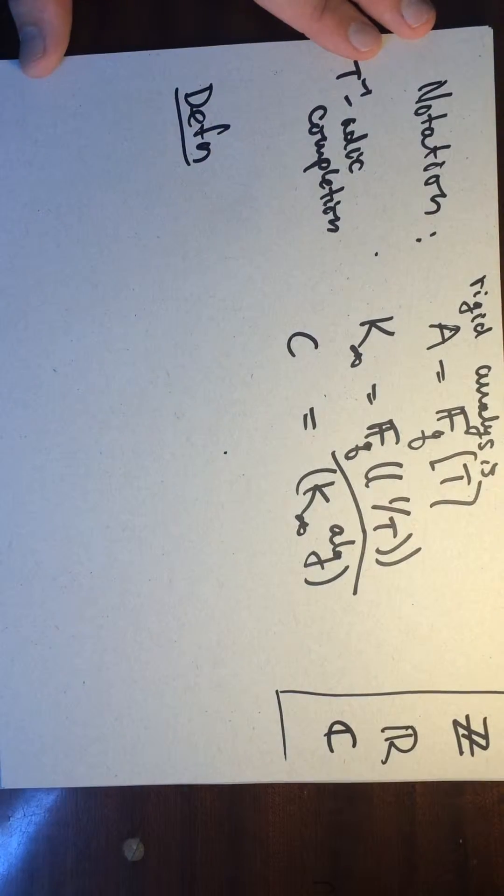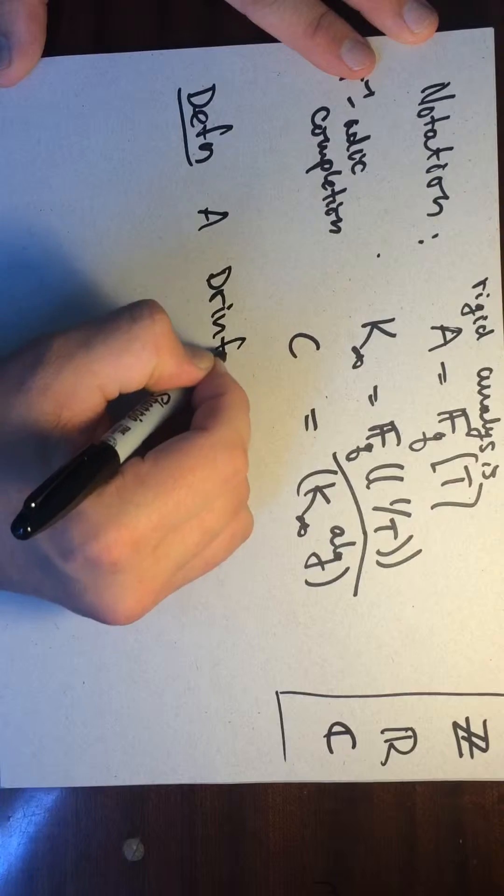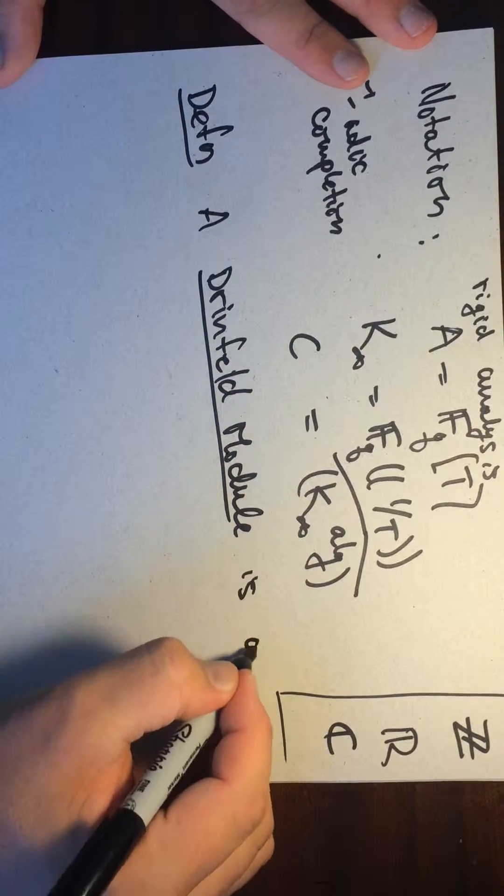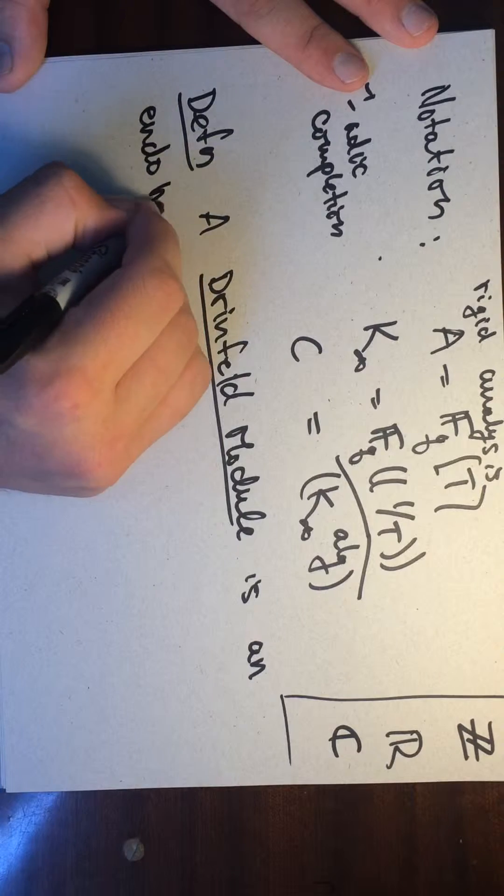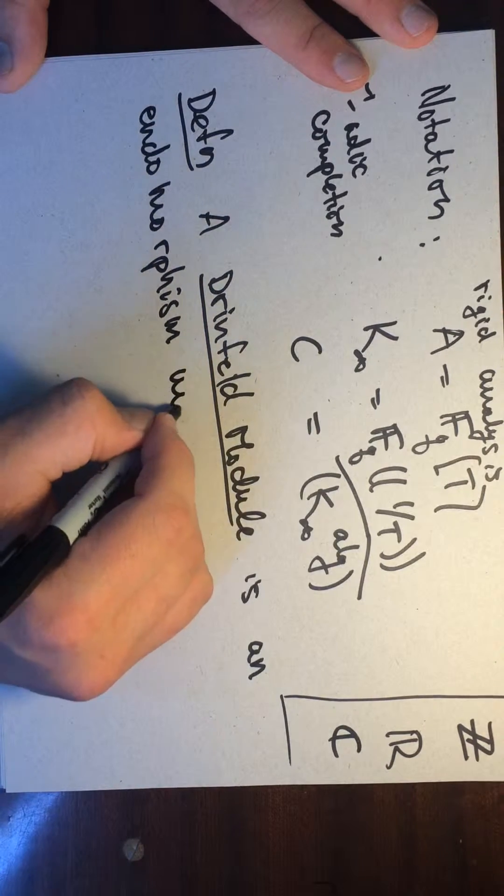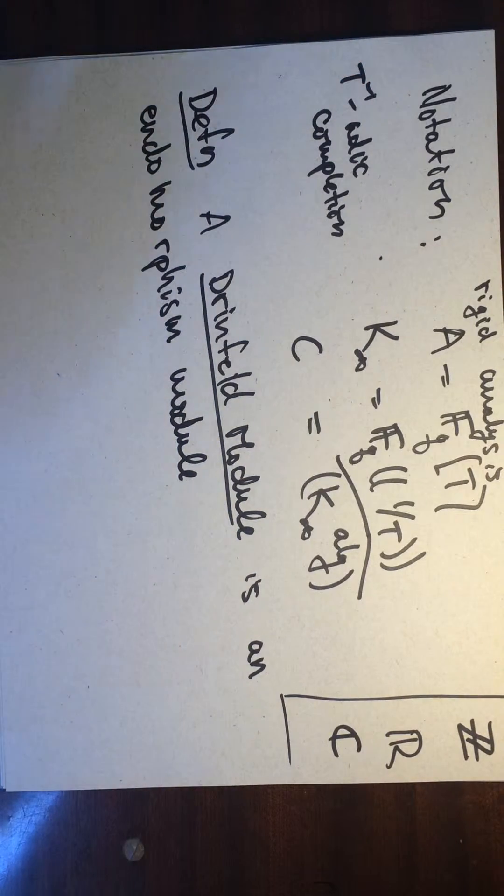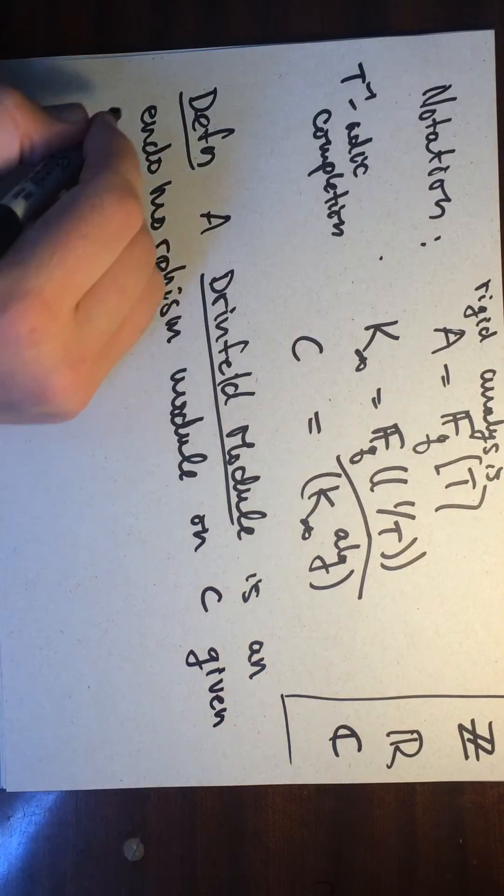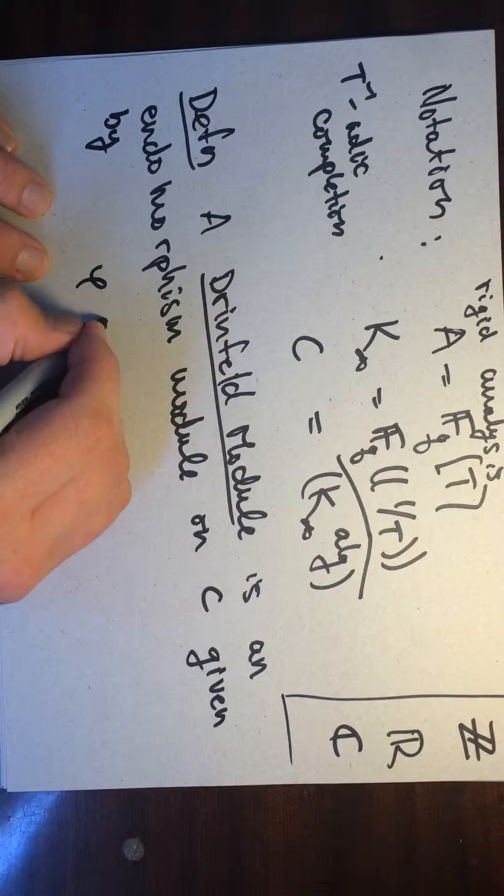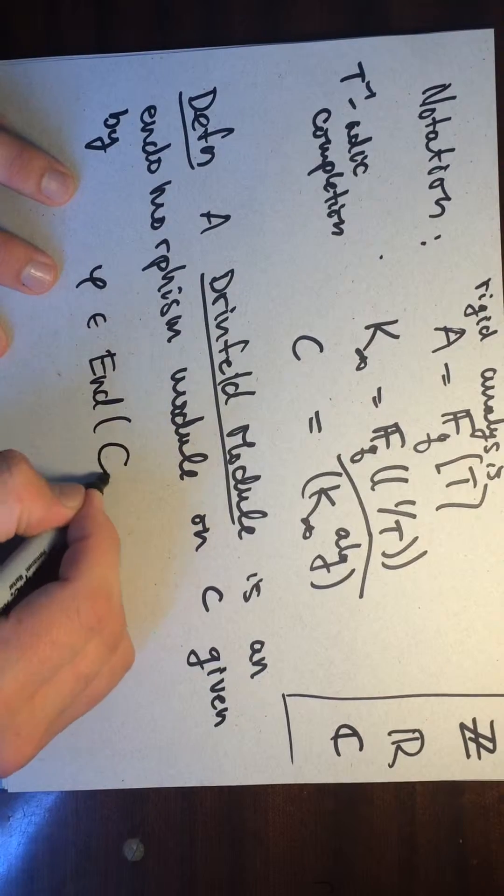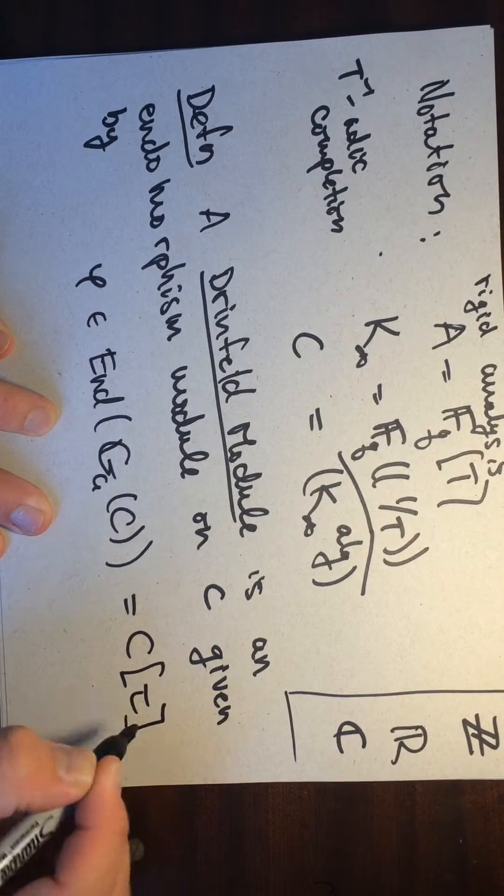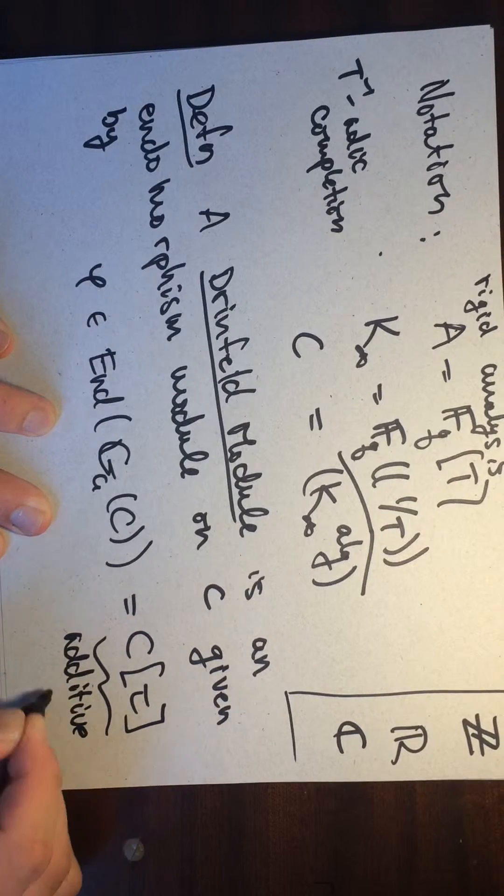I can tell you what a Drinfeld module is. So a Drinfeld module is an endomorphism module. So an endomorphism module again is one of these modules that we cook up from an abelian group and an endomorphism. And so we make it a Z[T] module or a C[T] module, on C, given by fixing a phi in, so we'll take the endomorphisms of the additive group. So the additive group of this. So I take the additive group and I plug in this thing. And so we saw that before that these are the additive polynomials.